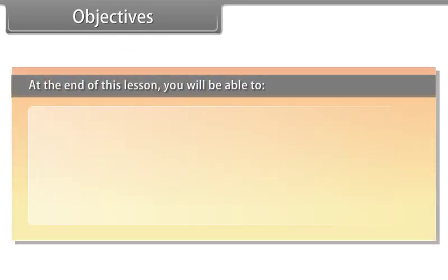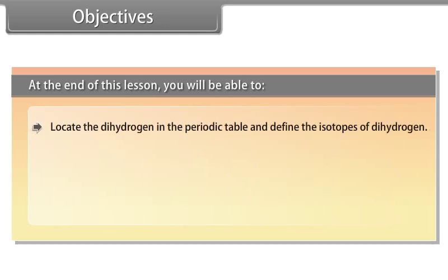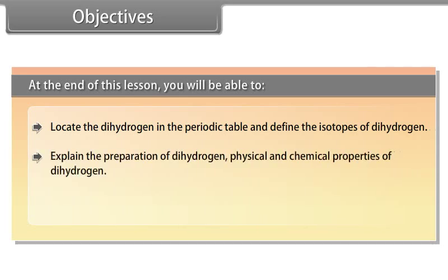Objectives. At the end of this lesson, you will be able to locate the hydrogen in the periodic table and define the isotopes of hydrogen. Explain the preparation of dihydrogen, physical and chemical properties of dihydrogen. Explain hydrides.